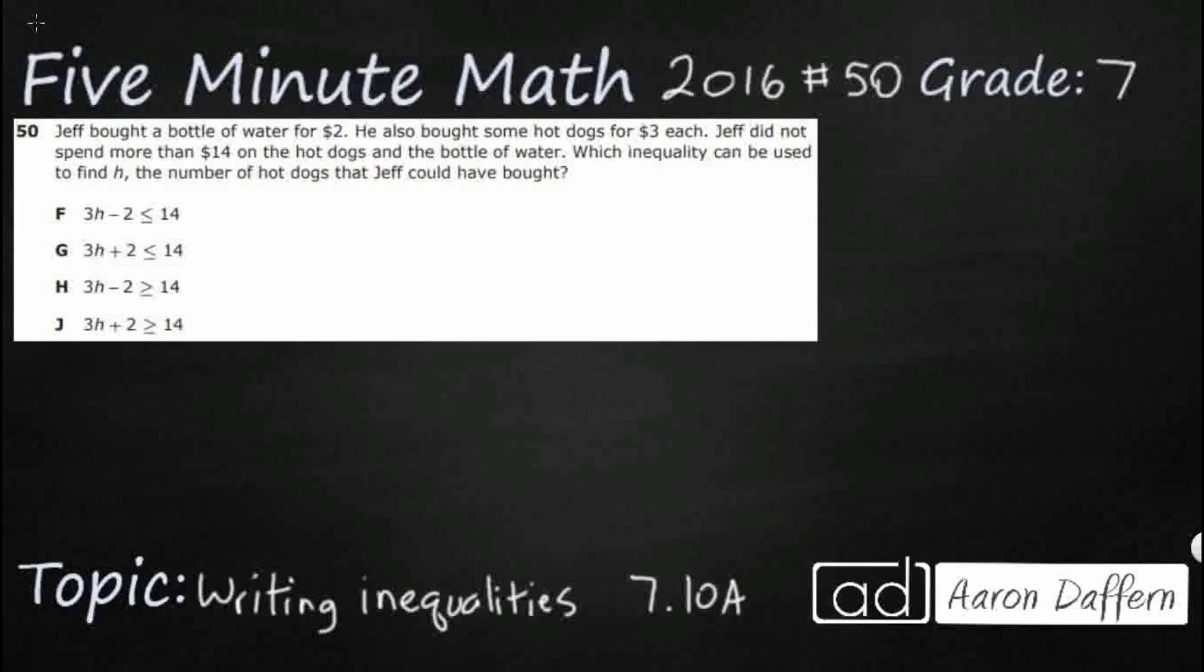So we have Jeff and he's buying a water bottle for $2, buying some hot dogs for $3 each. He did not spend more than $14 on the hot dogs and the water bottle and we need to find an inequality to find H, the number of hot dogs that he could have bought.